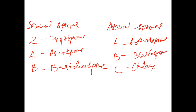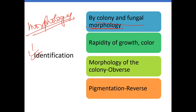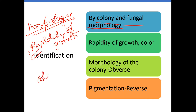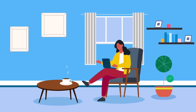Fungi identification is done by colony and fungal morphology, rapidity of growth, color, morphology of the colony surface, and reverse pigmentation. These are the key identification parameters.